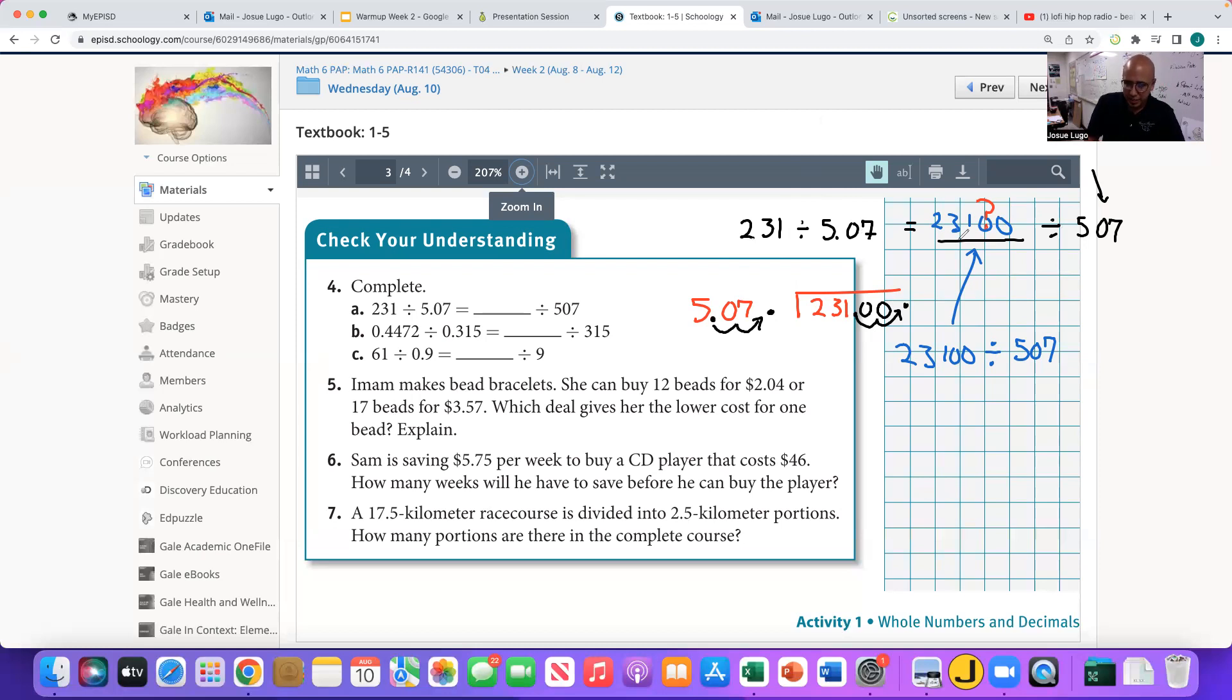You're just finding the number that would make these two equivalent expressions. Again, all I did is I put it into the division box. I changed it so that I'm working only with whole numbers. And so the whole number that has to be divided by 507 has to be 23,100.